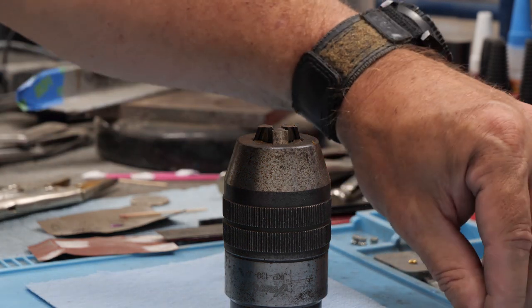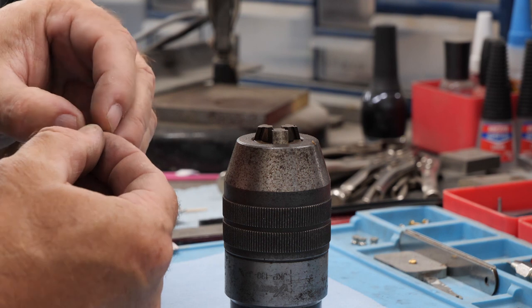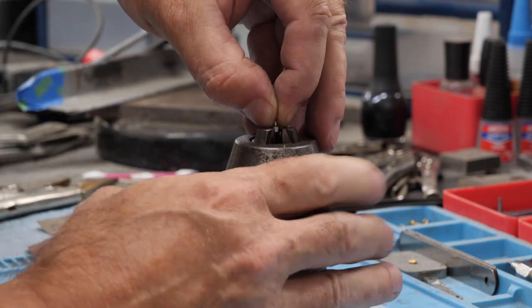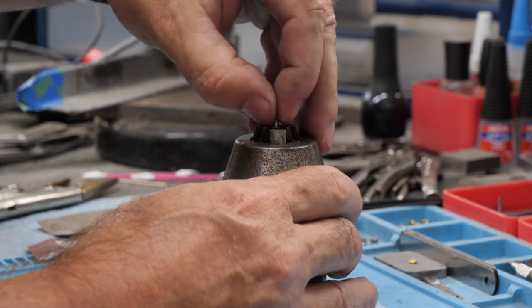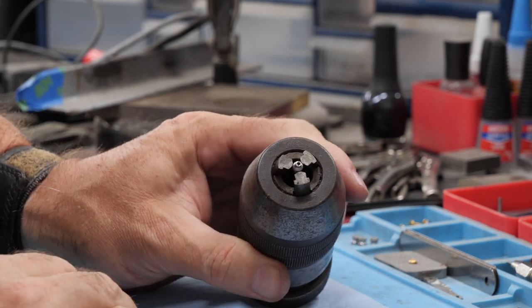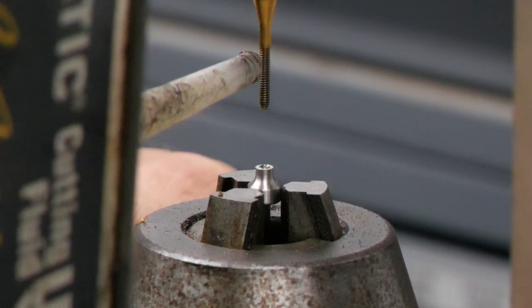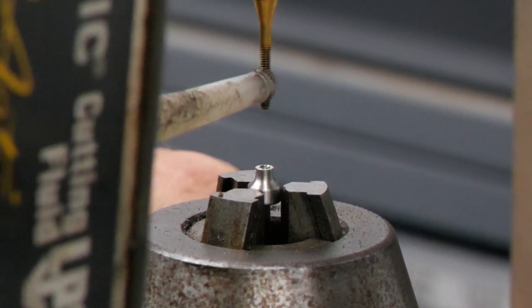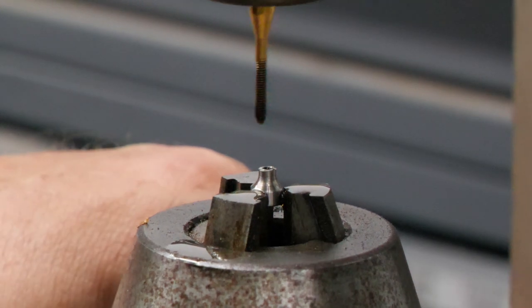And then I'm going to go ahead and stick it in this extra drill chuck to hold it while I tap it. This drill press is dedicated to my tapmatic setup. This thumb stud is going to get tapped 0-80 using a form tap running at about 500 rpm.